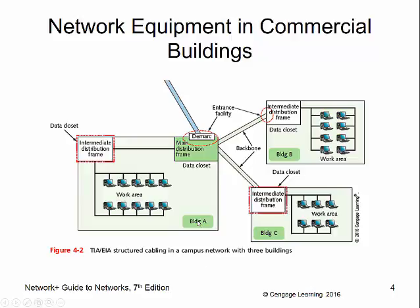We also have the MDF — the main distribution frame — which is really nothing but the server room or closet where the main connection comes in. For connecting other buildings together, we use backbones: high-capacity cables that link outlying buildings to our MDF. Inside those buildings, we have IDFs — intermediate distribution frames — which are wiring closets full of switches, patch panels, and all that stuff.